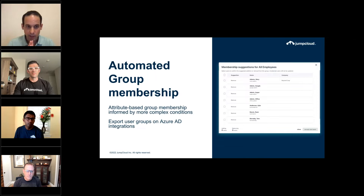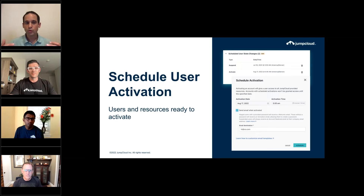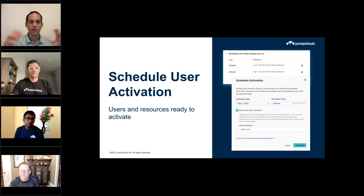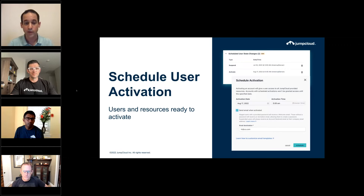One interesting thing we've added is the ability to schedule the activation of a new user. We've added the ability to identify users and put them in a suspended state once created, so they don't need to be activated immediately. For example, if 50 users are joining on August 15th, an admin can set up access rules and group assignments in advance and schedule that activation for day zero when the employee actually joins — with dates pulled from HR environments or manually entered.